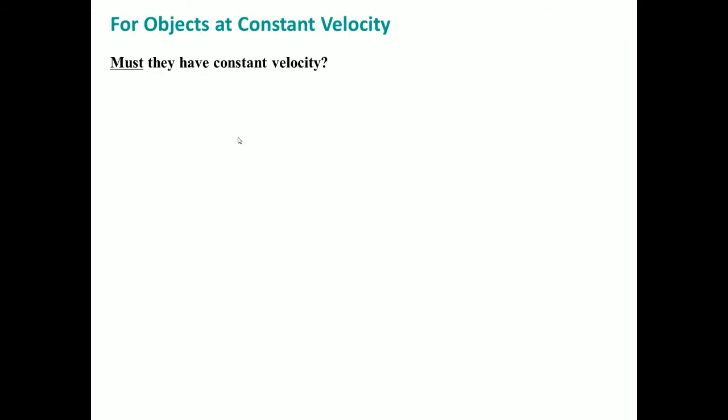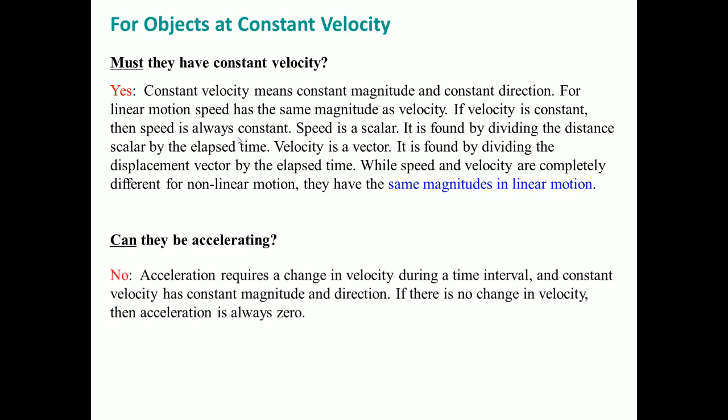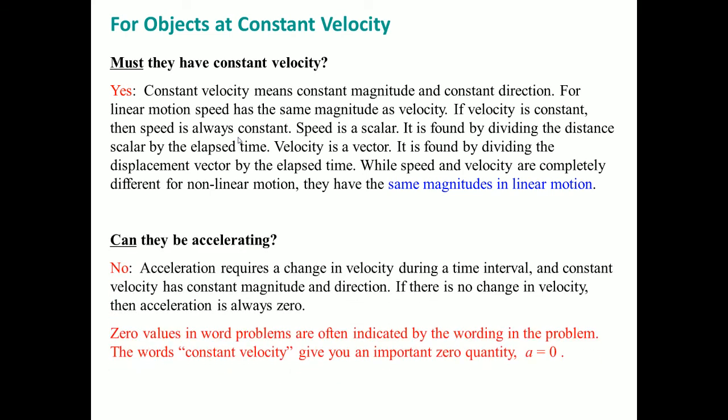The important thing to understand is that if the question says constant velocity, that means a equals zero — there can be no acceleration. That's the very important part. If the question says the object moves at constant velocity, you put a equals zero. Done.